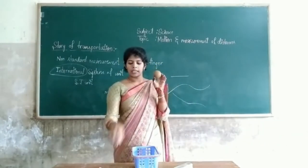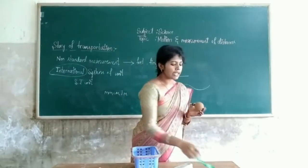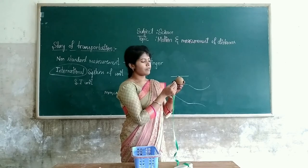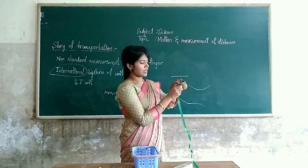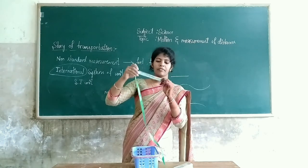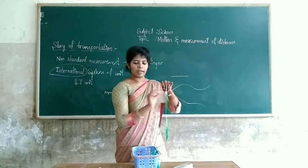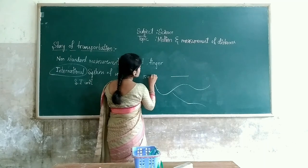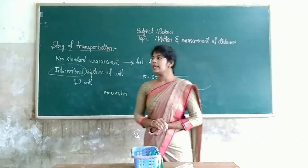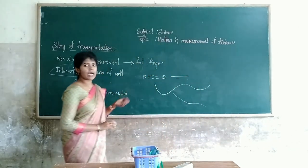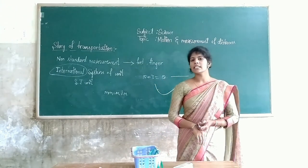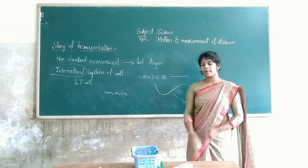If the object is circular, it is impossible to measure with the help of a scale. That time, we use thread. Here, thread is invisible to you, so I use tape. We measure — it is 15 here. Then from here to here, it is 3. So 15 plus 3 is 18. By using thread, we can easily measure the distance of a curve.